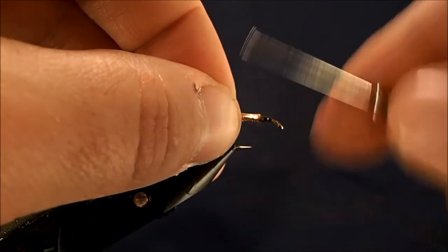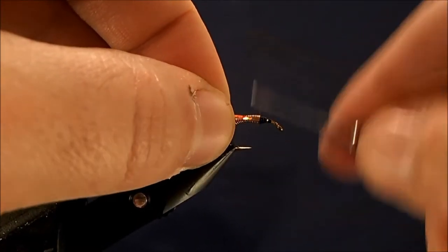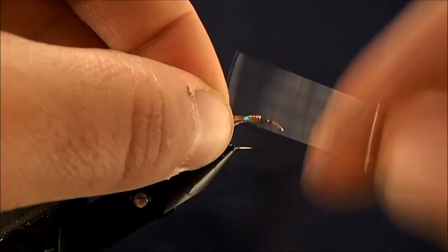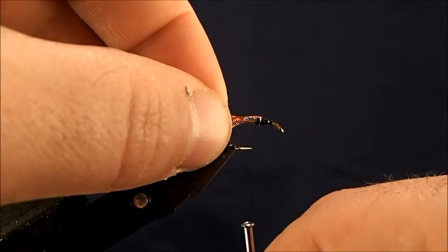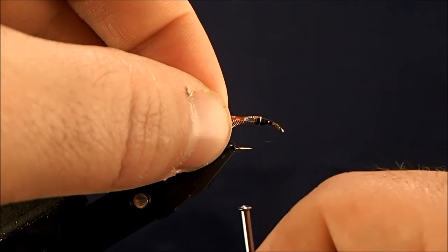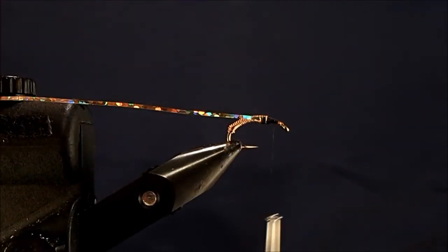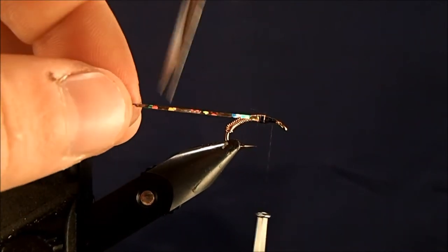Tie in one side, and I'm going to take it back just slightly over my copper. I like to bring the thorax to about the tip of the hook there. So once I'm pleased that that's secure.